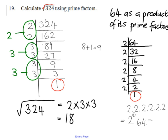How else can we write this? How many 2s have we got multiplied together? 1. How many 3s have we got multiplied together? I'm looking at 3s. I have got 2 of them multiplied together. So, that is the square root of 324.